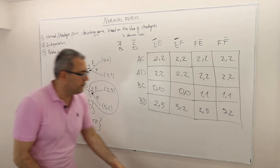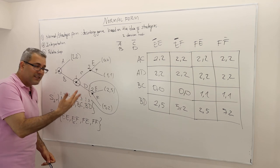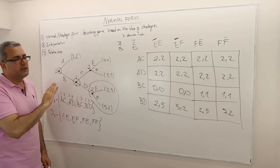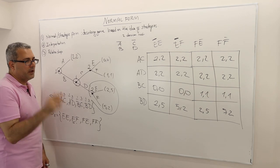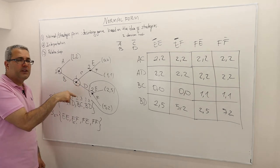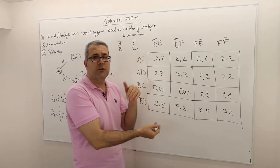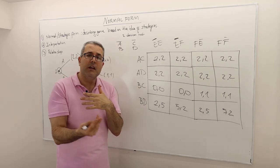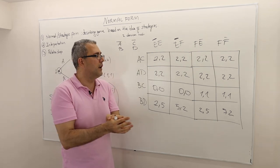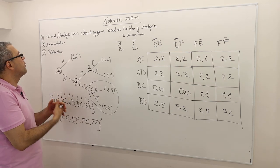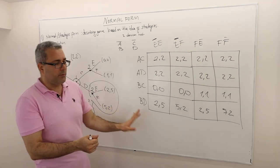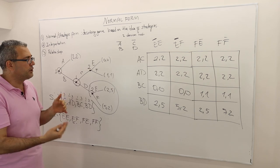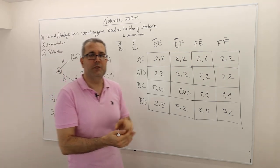Two lessons from this: first, giving different names to actions at different decision nodes simplifies things considerably. Second, changing the information structure changes the structure of the game in normal form representation. Whether it changes the outcome, we're not there yet — we haven't started analyzing games — but it does change the strategic form. Next episode I'll talk about the interpretation of normal form games and the relationship between the game tree and normal form representation.